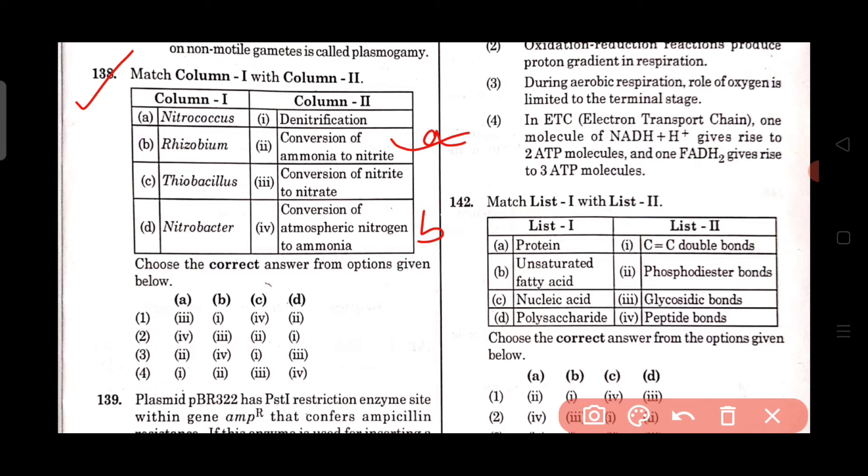Thiovacillus helps in denitrification and Nitrobacter helps in conversion of nitrite to nitrate. Option number 3 is the correct answer.